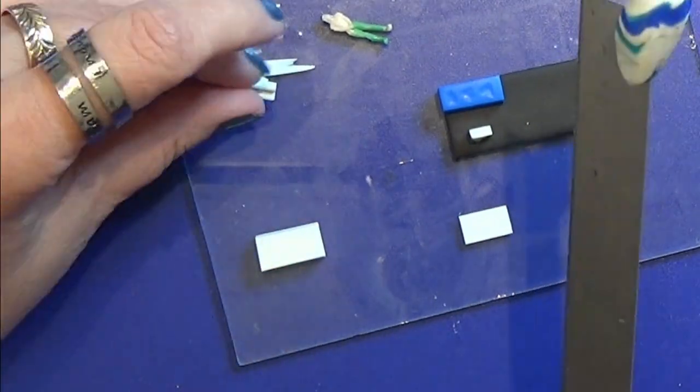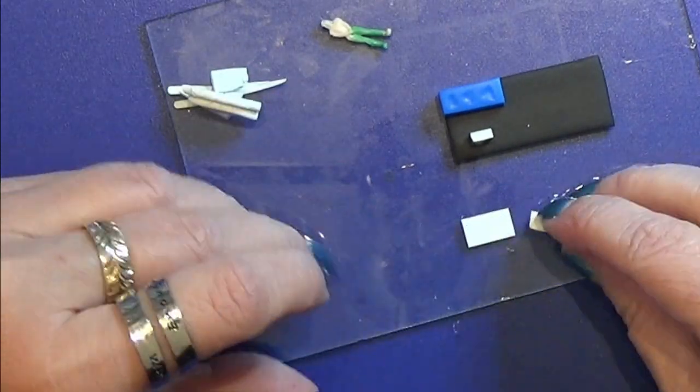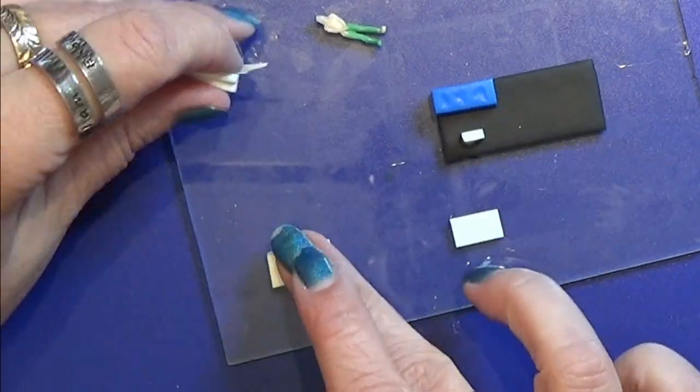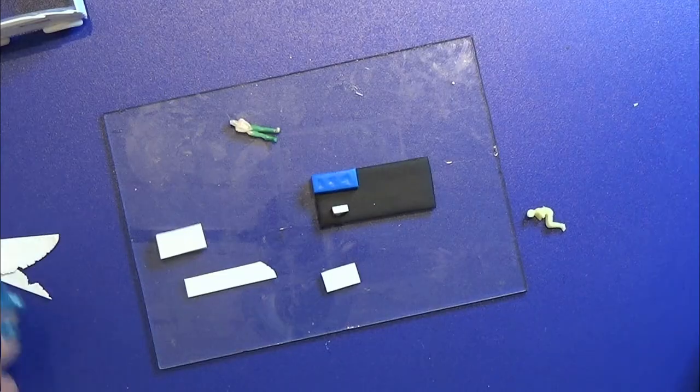Then I rolled another piece of white clay on a thicker setting. Actually I placed this double and I'm going to make a kitchen furniture out of that with the sink and cabinets.